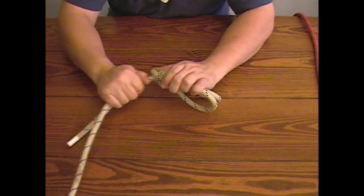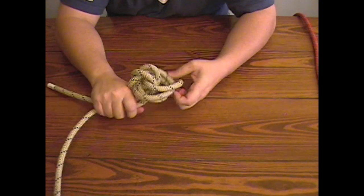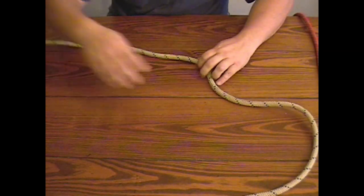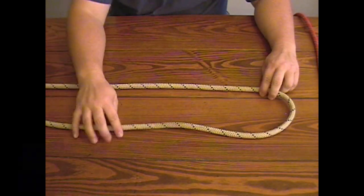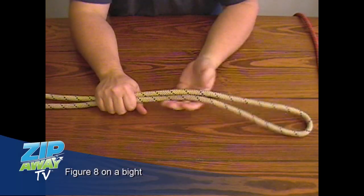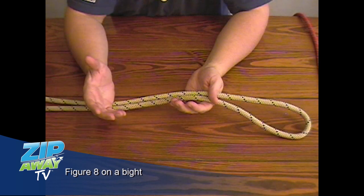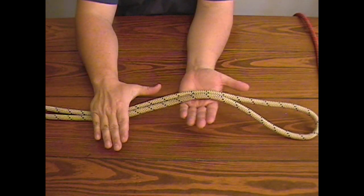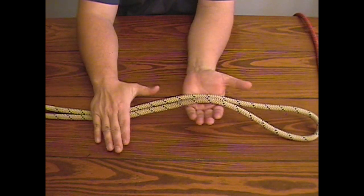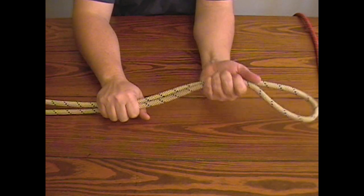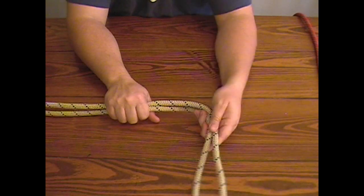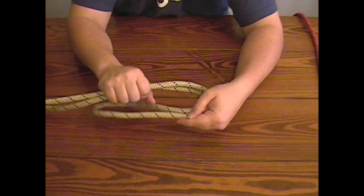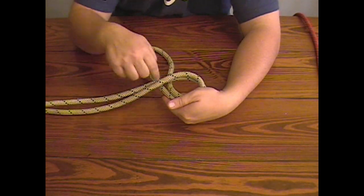Another knot you're going to see is the figure eight on a bite. Bear with me while I get this one untied. Again you start off with a good bite of rope. And again for the way I tie it, which I find most comfortable for me, is to start with the bite in my left palm up and my right palm down, so both of my thumbs are pointing to my left.